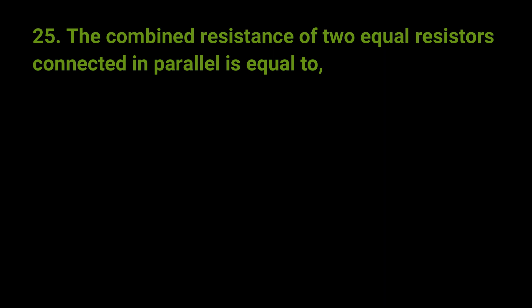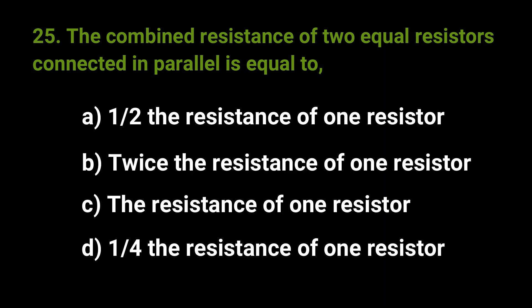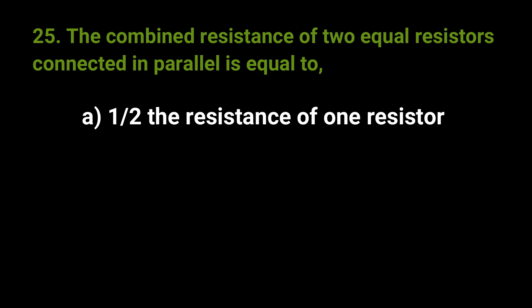The combined resistance of two equal resistors connected in parallel is equal to. The answer is A. Half the resistance of one resistor.